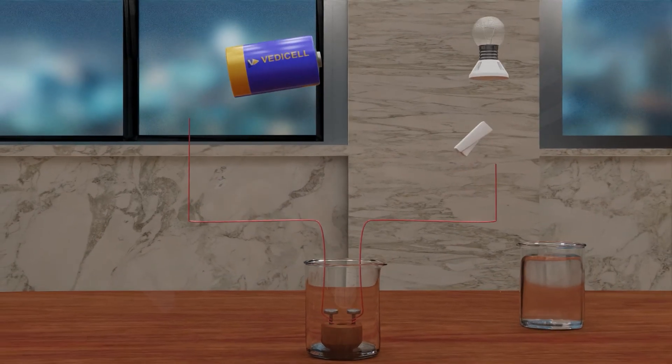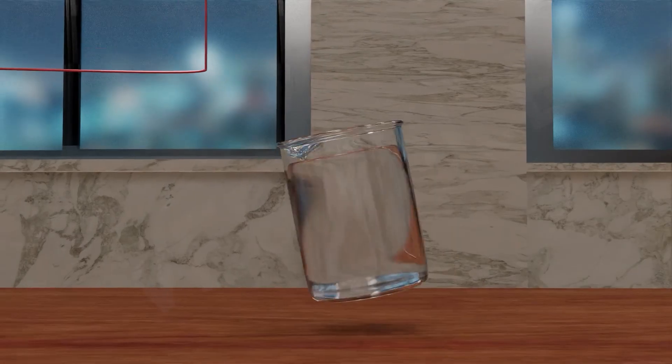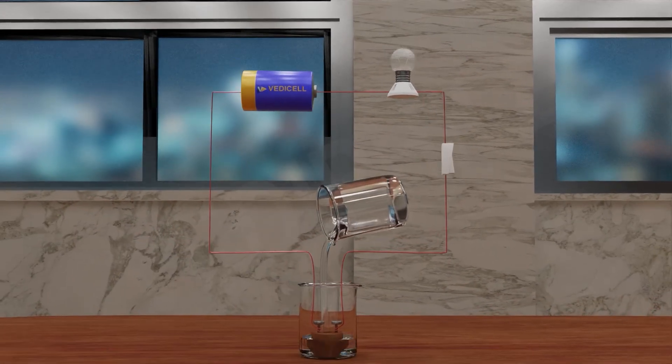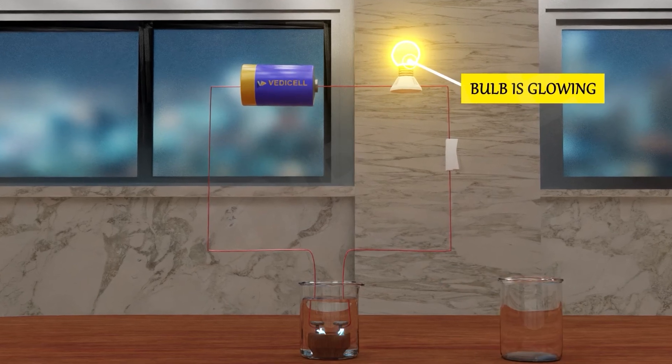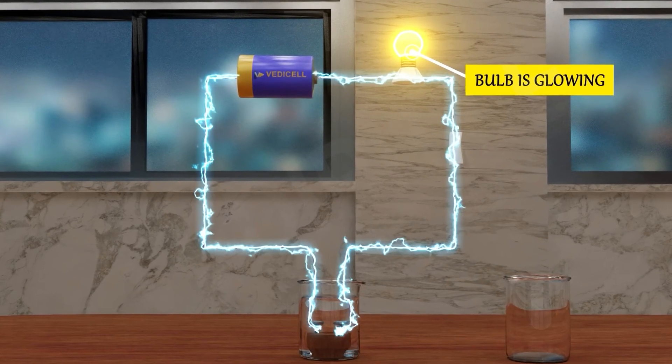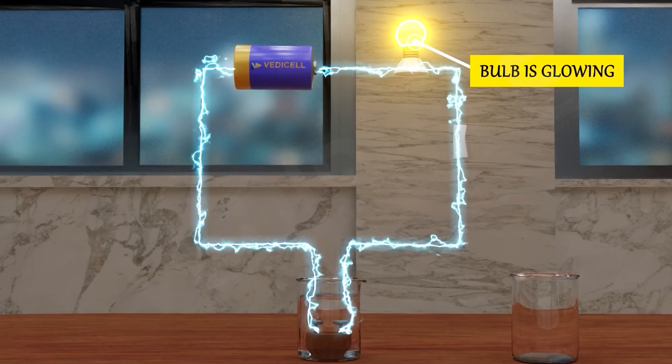Now, if we repeat the same experiment with a base like sodium hydroxide, what will happen? Oh, the bulb is glowing. This indicates that base solution in water also conducts electricity.